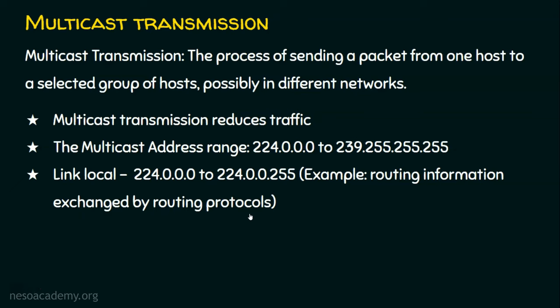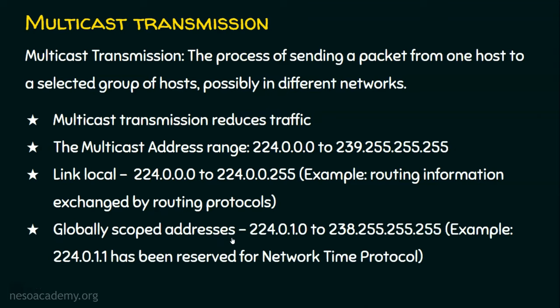We also have globally scoped addresses which range from 224.0.1.0 to 238.255.255.255. For example, the IP address 224.0.1.1 has been reserved for NTP — that is, Network Time Protocol. Network Time Protocol is used to synchronize the clocks in devices. If you manually assign the time in a device, it will not be 100% accurate. Rather, if you place an NTP server and ask all devices in the network to synchronize their clocks with the NTP server, that will be accurate. So automatic synchronization of clocks is always advisable. This is an example of globally scoped addresses.